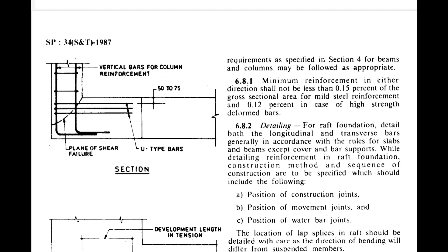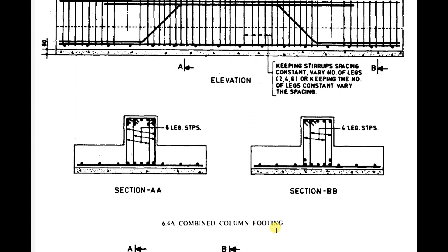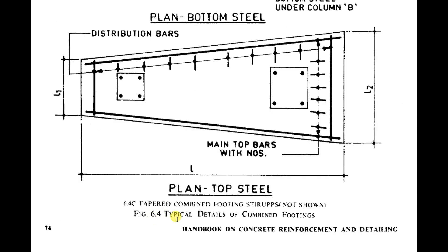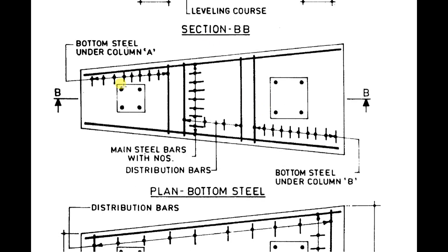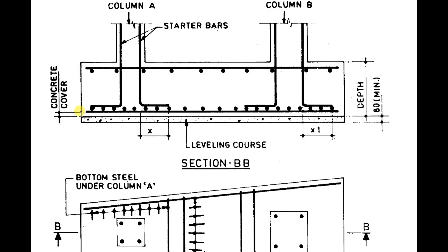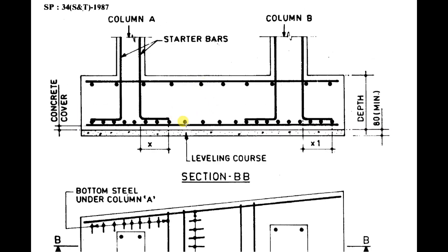As shown in figure 6.3 — column on edge of footing — U-type bars must be provided when the column is placed at the edge. Looking at combined footing reinforcement in elevation, two columns are shown with top bars, bottom bars, and stirrup links. If the footing depth is significant, stirrup bars must be provided. Figure 6.4 shows the typical details of a combined footing with plan of top steel and plan of bottom steel.